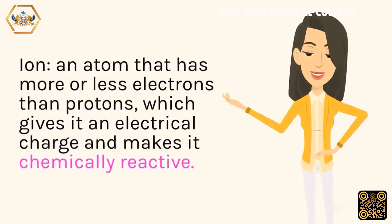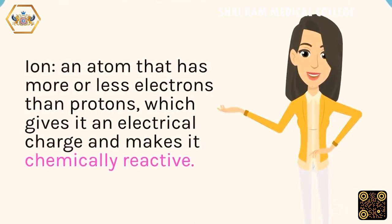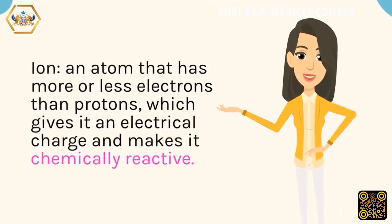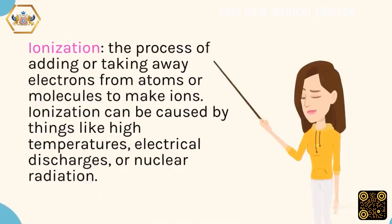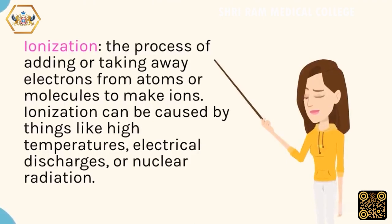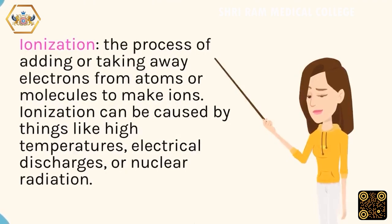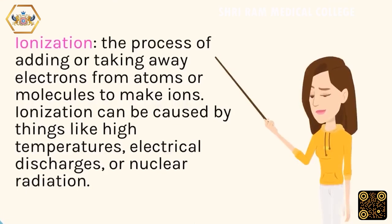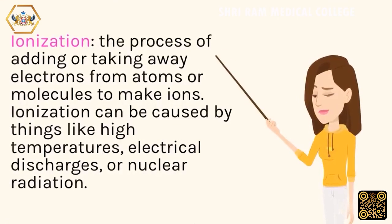Ion: an atom that has more or less electrons than protons, which gives it an electrical charge and makes it chemically reactive. Ionization: the process of adding or taking away electrons from atoms or molecules to make ions. Ionization can be caused by things like high temperatures, electrical discharges, or nuclear radiation.